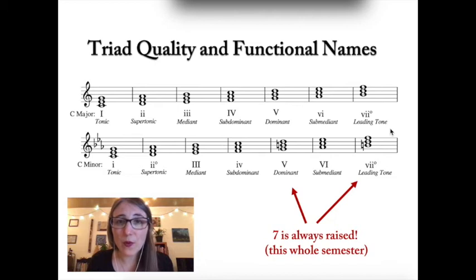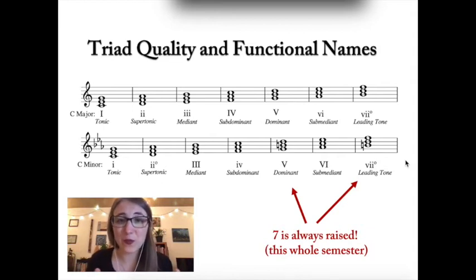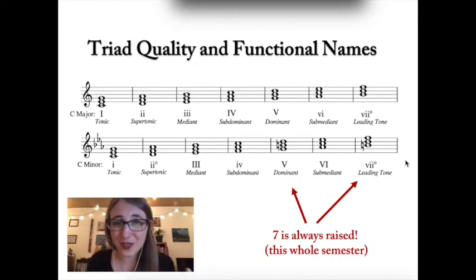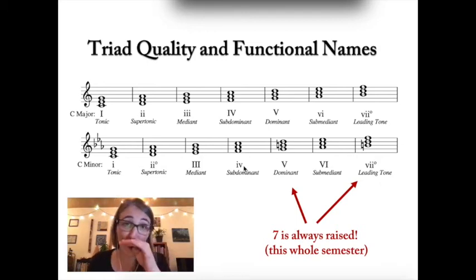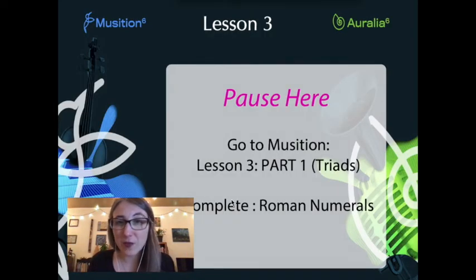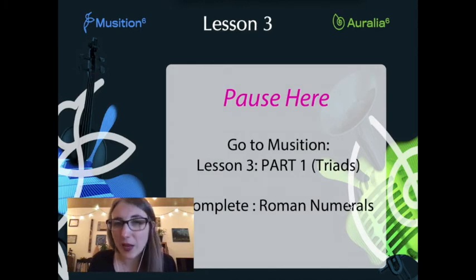These are the different functional names. Before you dive into Musician, take a minute and memorize them — you'll get nothing out of your homework if you just put the handout in front of you. Group them: in the major key, the major chords are 1, 4, and 5; the minor chords are everything else except 7, which is always diminished. Once you think you've got it memorized, head over to Musician and try the Roman numeral section.